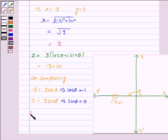We know that cos π = -1 and sin π = 0. So we can see that this angle is π.